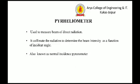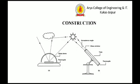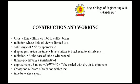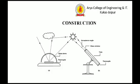The pyrheliometer is used to measure the beam of direct radiation. It collimates the radiation to determine the beam intensity as a function of incident angle. It is also known as the Normal Incidence Pyrheliometer. Its construction uses a long collimator tube to collect a beam, as we can see in the diagram.